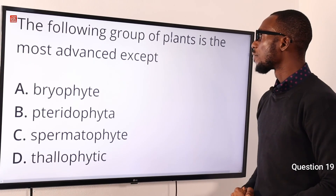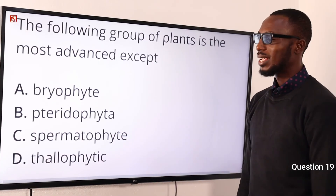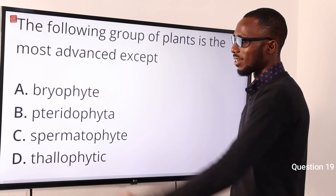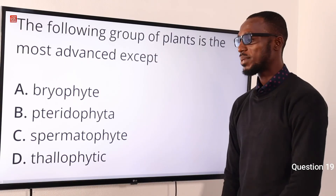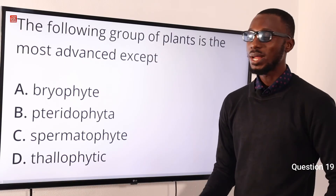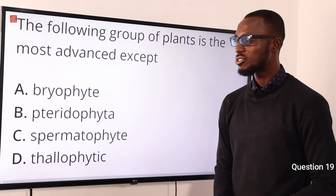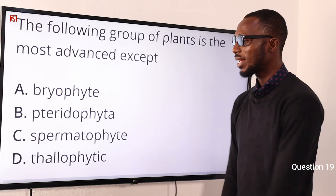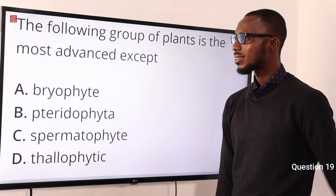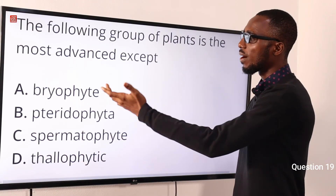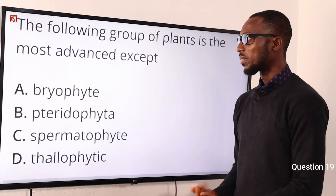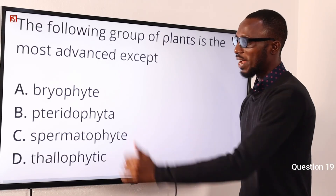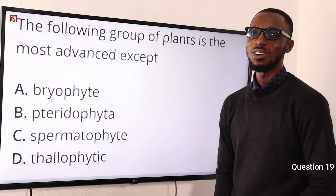Number 19. The following group of plants is the most advanced except what? The exception is the thallophytes — they are simple green aquatic plants; example: Spirogyra. The other options include seed plants and liverworts and mosses. The exception is the thallophytes — option D is the correct option.